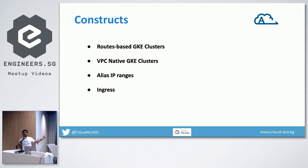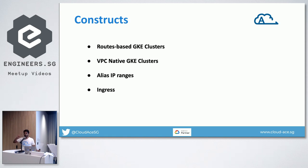When you create a routes-based GKE cluster, GKE will install some routes on your behalf into the VPC in which the Kubernetes cluster is installed. Google automatically creates one route per node, saying: all traffic meant for a pod running on a specific node should be sent to that node, and the node will take care of rerouting it to the pod.